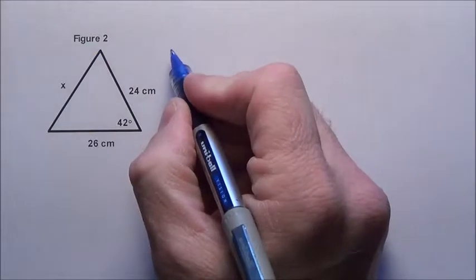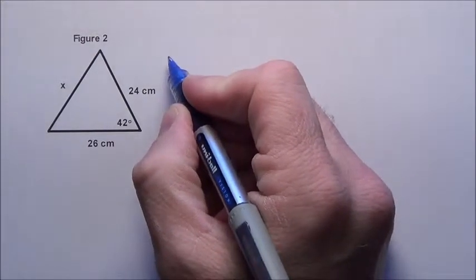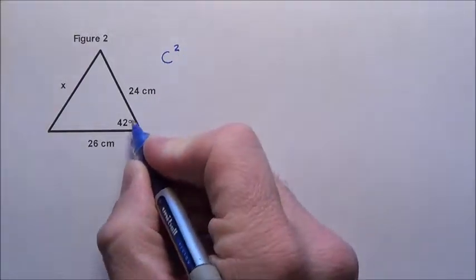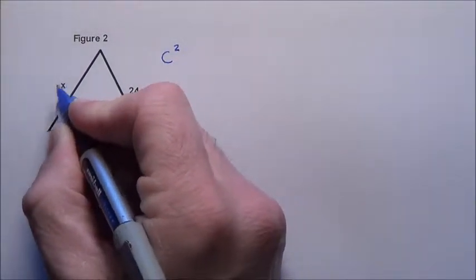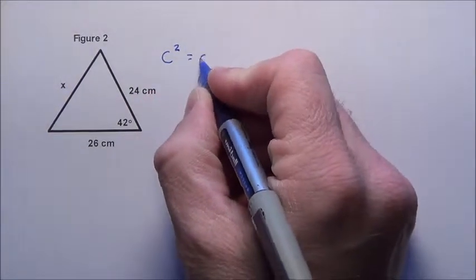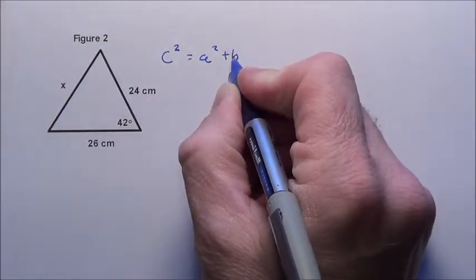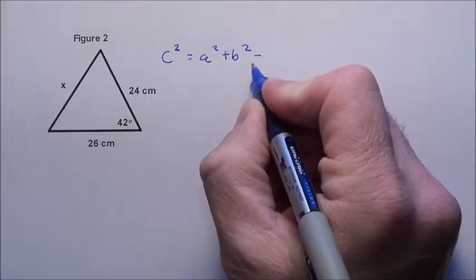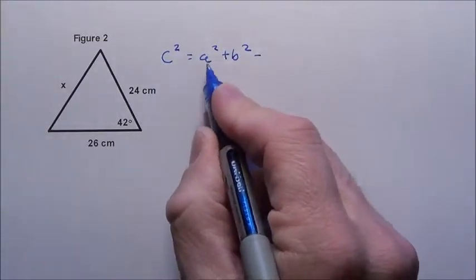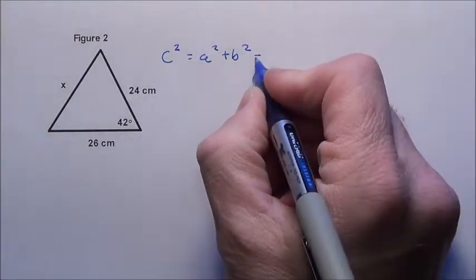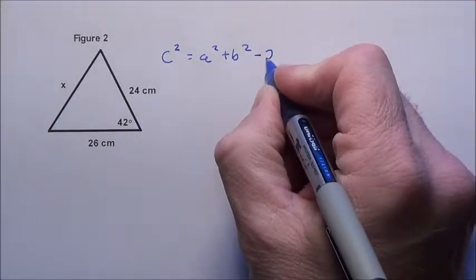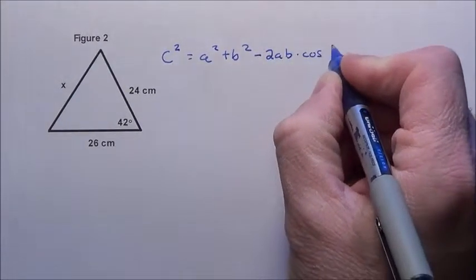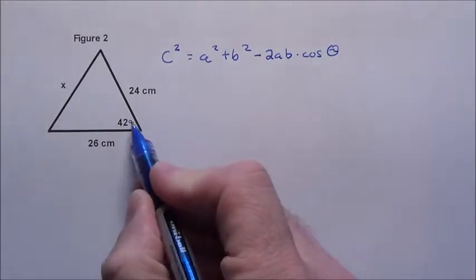Now, the way I remember the law of cosines is like the Pythagorean theorem: a² + b² = c². So c², which is the side opposite here (that x), equals one leg squared plus the other leg squared, but we take away a little bit. See how that's like the Pythagorean theorem? But then we subtract 2 times each of the legs times the cosine of the angle between the legs, which is 42°.